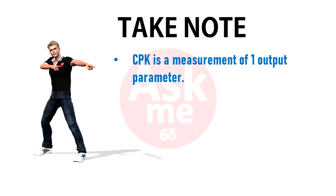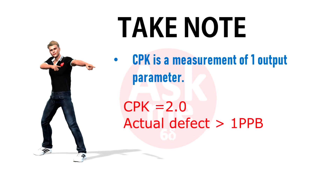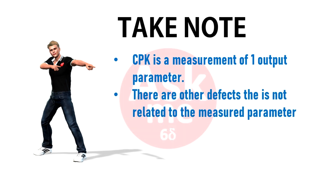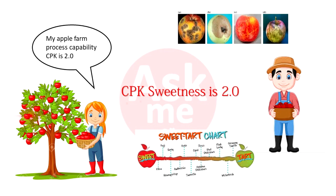One important thing to note is that CPK is a measurement of the process by a specific output parameter. A process with CPK of 2 may have fall-out more than the calculated value — because CPK measures only a specific output parameter, and that parameter does not represent all the defects from that process.